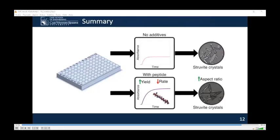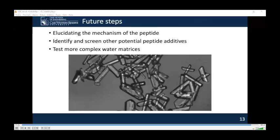In conclusion, a high-throughput platform was created to study the formation and morphology of struvite with and without peptide additives. Formation was modeled by a first-order kinetic model with induction time to allow for quantitative assessment of kinetic parameters. The presence of peptide increased the yield and decreased the formation constant in a non-dose-dependent way in the concentration range tested. The morphological study revealed that slower precipitation corresponded to narrower crystals when peptide was present. Together, the peptide is a promising additive for struvite growth. In the future, we want to elucidate the mechanism of peptide action, use our platform to identify and screen other potential peptide additives, and test more complex water matrices.